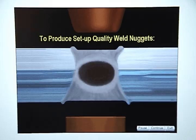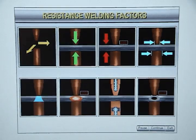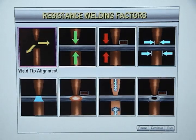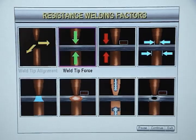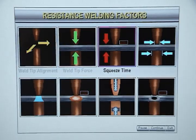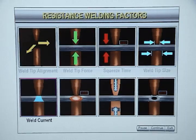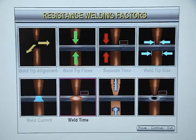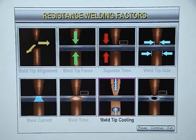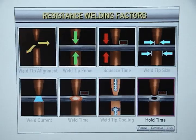To produce setup quality weld nuggets, you need to understand how resistance welding is affected by weld tip alignment, weld tip force, squeeze time, weld tip size, weld current, weld time, weld tip cooling, and hold time.